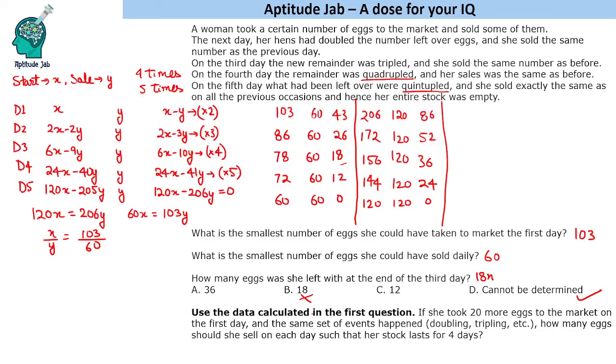The fourth question says use the data calculated in the first question, so we use the 103 and 60 values. It says if she took 20 more eggs to the market on the first day, meaning we have to use x equals 123. It specifically mentions to use the data from the first question. If the same set of events happened—doubling, tripling, quadrupling, etc.